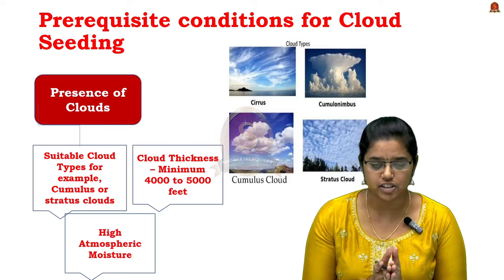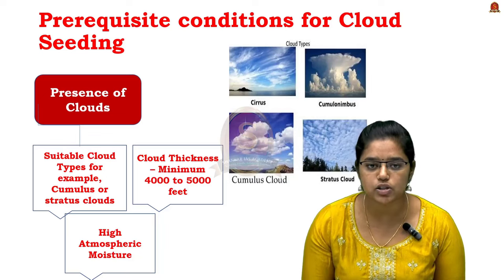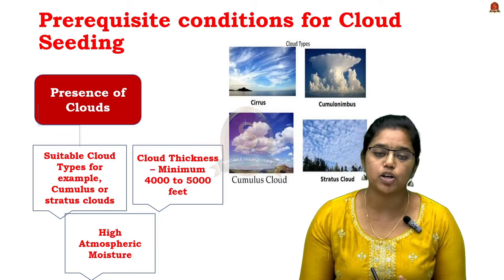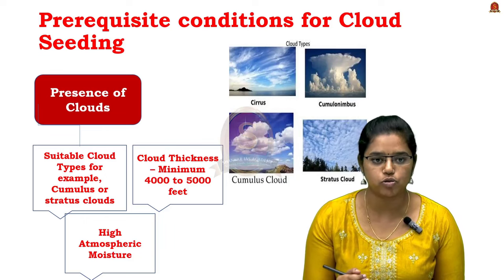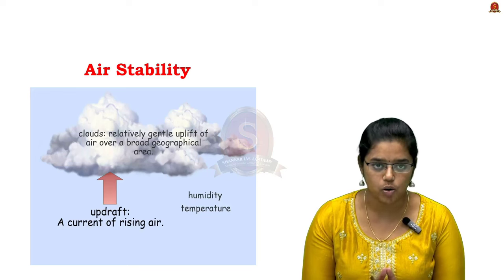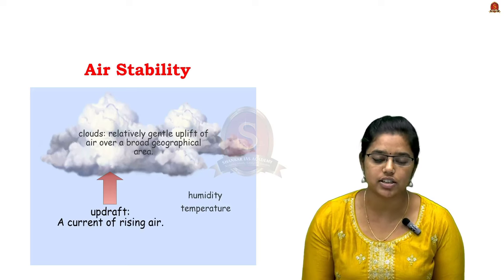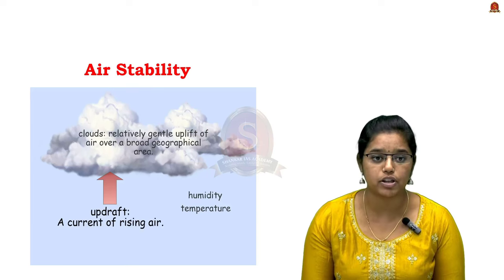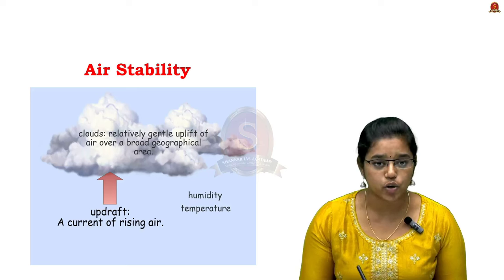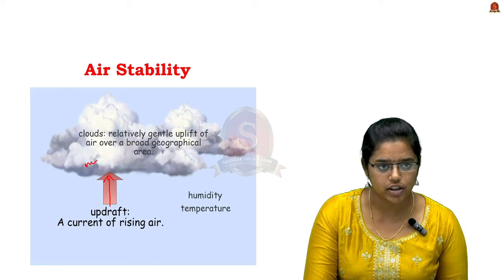Regarding cloud thickness, the clouds should have a minimum thickness of about 4,000 to 5,000 feet to ensure sufficient water vapor for the precipitation process. It is also essential to have high moisture content to support cloud formation. For air stability conditions, an updraft — a current of rising air — is required, which is usually seen in unstable conditions. This vertical rise of air helps in the sustainable formation of clouds, continuously supplying moisture to higher altitudes.